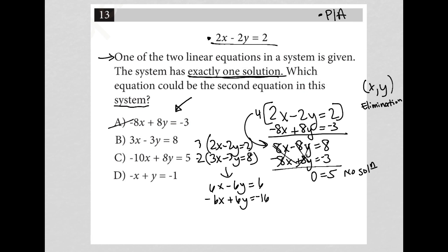You probably already noticed, hey, the same exact thing happens here. Both x and y are gone and I'm left with 0 equals negative 10, which again is no solution. So B is gone.